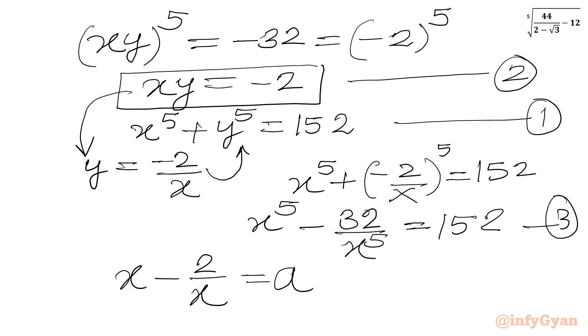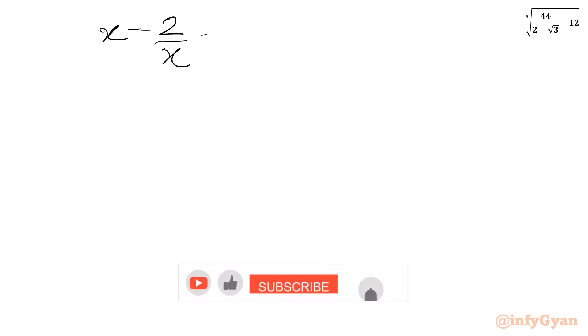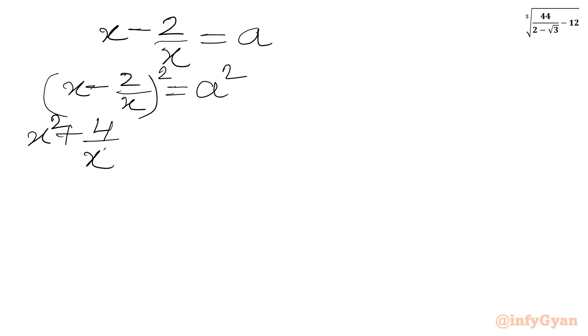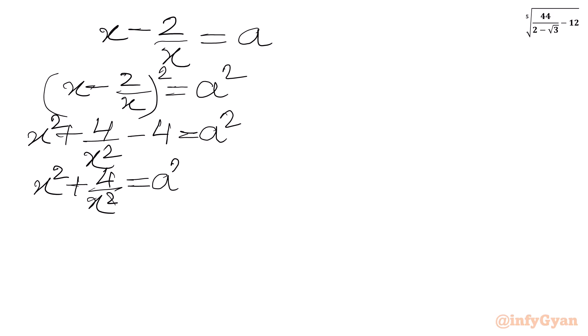Now I will use substitution. Let a = x − 2/x. Since x is in the interval (2, 3), x − 2/x is positive, so a must be positive. Squaring both sides: (x − 2/x)² = a², which gives x² + 4/x² − 4 = a², so x² + 4/x² = a² + 4. This is equation 4.